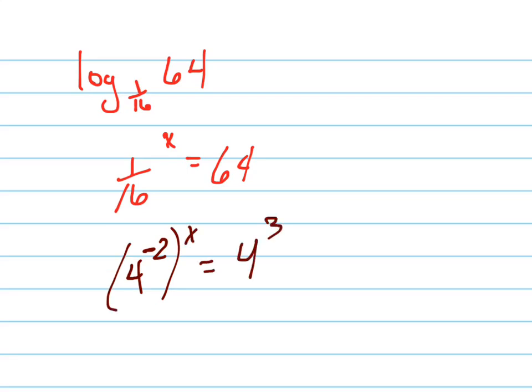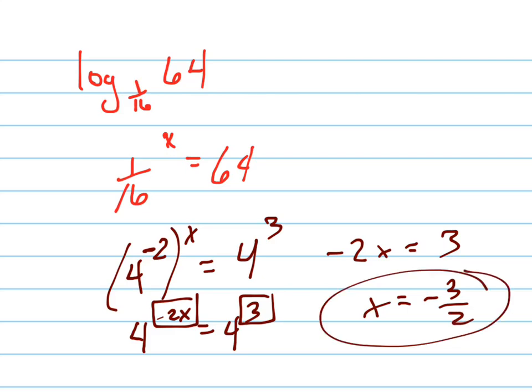That's the easiest way to do it by far, which means we've got 4 to the negative 2x equals 4 to the 3, which means negative 2x equals 3, which means x equals negative 3 halves. That's your answer.